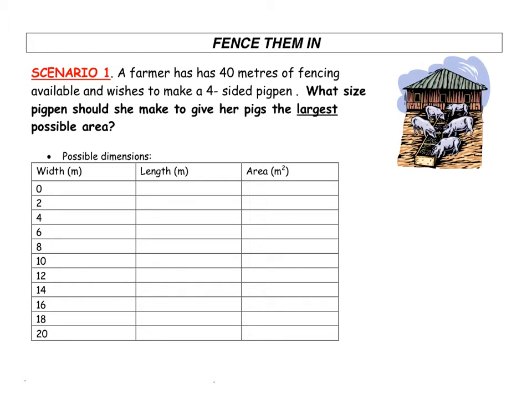We can look at a number of different possible dimensions and this table will summarize them. Suppose we say that the width is 2. Knowing that we have to have a perimeter of 40, since it's 40 meters of fencing, this would obviously be 2, and then we can figure out that this would have to be 18 and this would have to be 18. That gives us 36 plus 2 plus 2 is 40. So the length here would be 18.